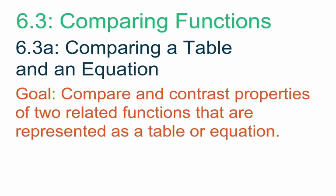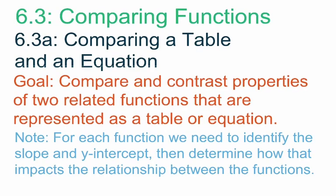Essentially, we're going to have two functions. One will be represented as a table and the other as an equation. Within the table and the equation, we'll need to identify both the slope and the y-intercept of each. Then we're going to compare the slopes and y-intercepts and determine which function has the greater slope and which has the greater y-intercept, and see how that impacts the functions.